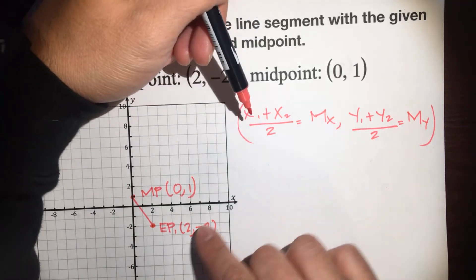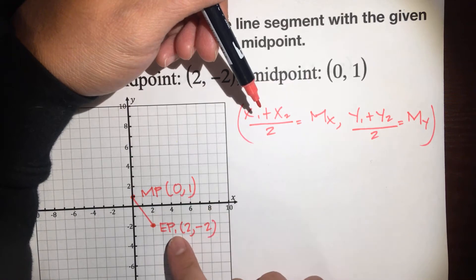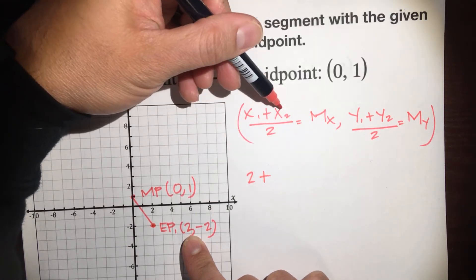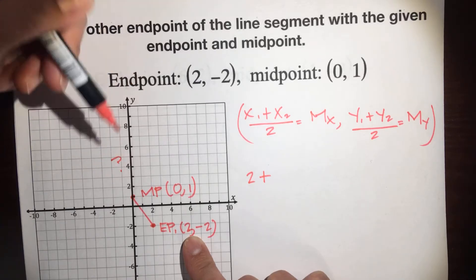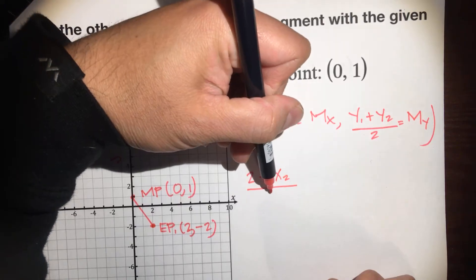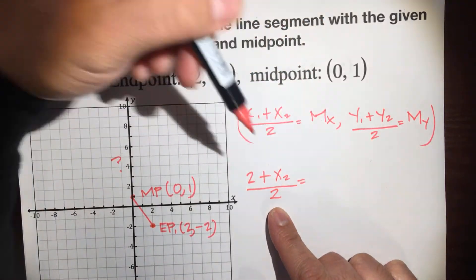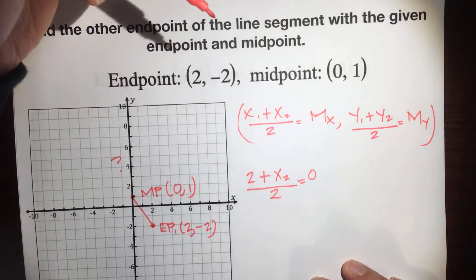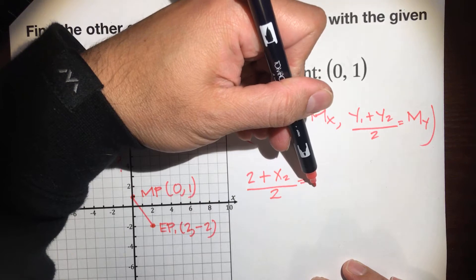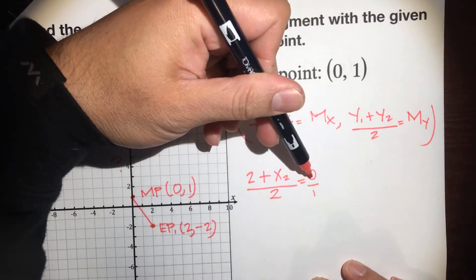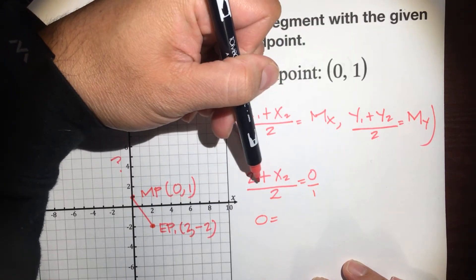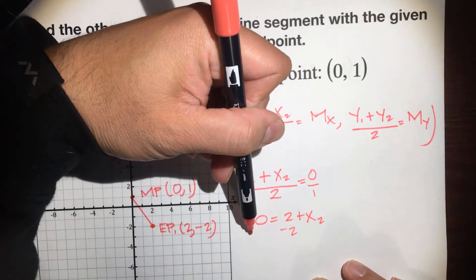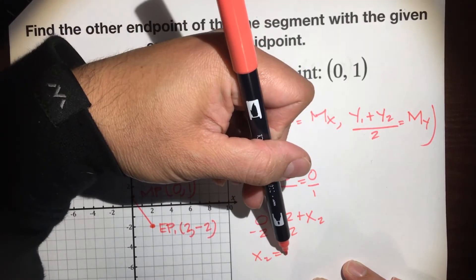So we're going to substitute these values in. Our first endpoint's x value is 2, so we're going to put that in: (2 + x2) / 2 = 0. Remember, this is the other endpoint's x value, and that's what we're trying to find. We're going to put the invisible 1 under the 0 and cross multiply. 2 times 0 is 0, equals 1 times (2 + x2), which is just 2 + x2. Then we subtract 2 from both sides, so the x value of the other endpoint is negative 2.